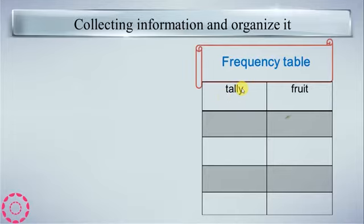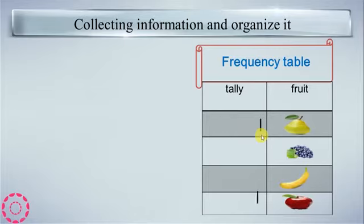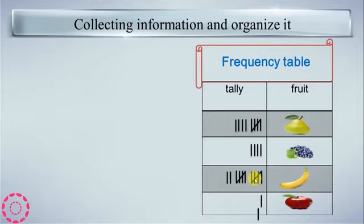We have the fruits. 1, 2, 3, 4, 5, 6, 7, 8, 9. 1, 2, 3, 4. Another group: 1, 2, 1, 2. And here: 1, 2, 3, 4, 5, 6, 7, 8, 9, 10, 11, 12.